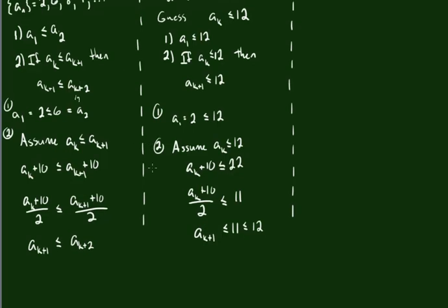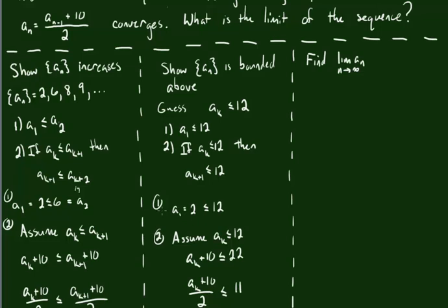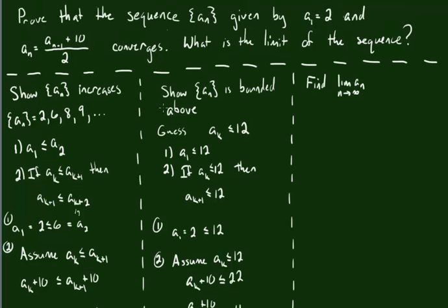So we've done the two things we were trying to do here. We have shown that the sequence increases, and we've shown that it has an upper bound. If it increases and has an upper bound, we have a theorem that says it's going to be definitely a convergent sequence. And so we now know this limit exists. We want to find this limit, and let's just go ahead and call it L for right now.